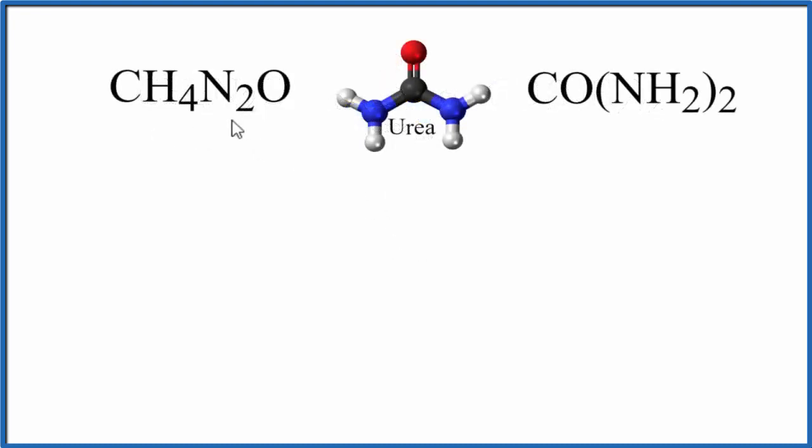So there's two ways we can write this. Both of these are the same in terms of the number and type of each atom. They have one carbon, four hydrogens, two nitrogens, and one oxygen. So they're equivalent like that.